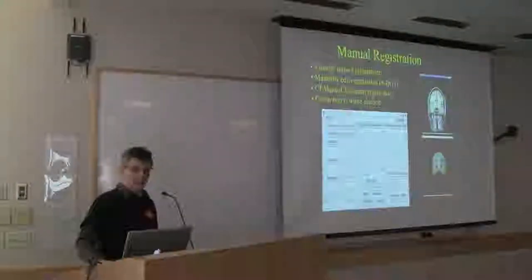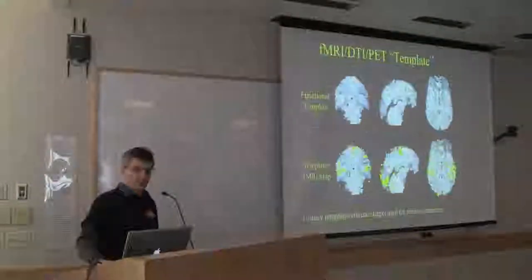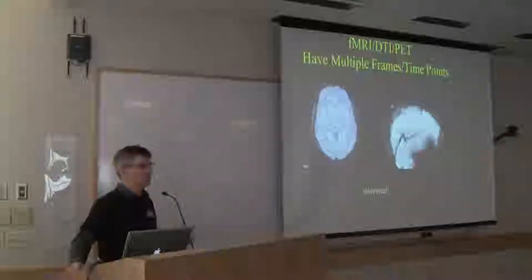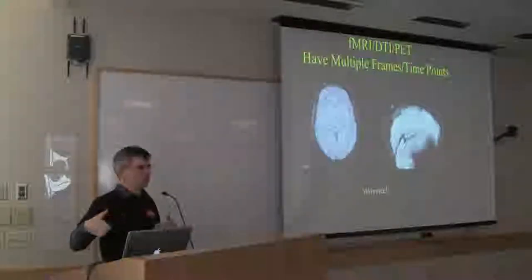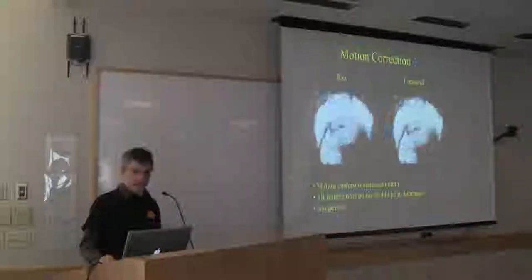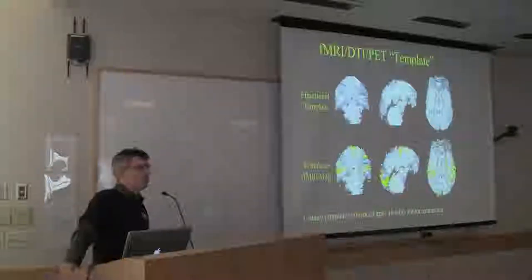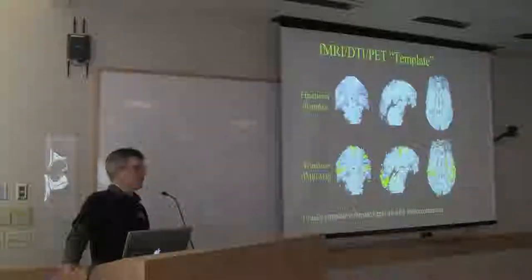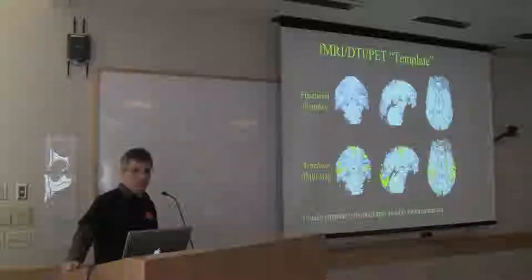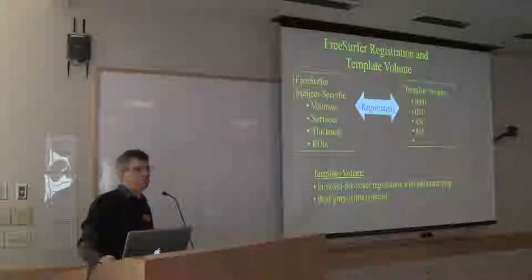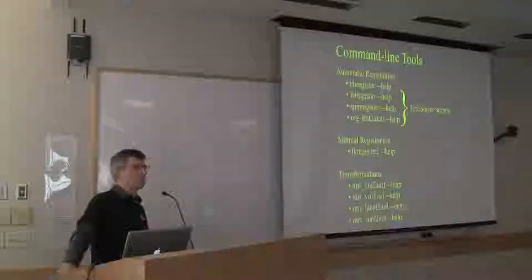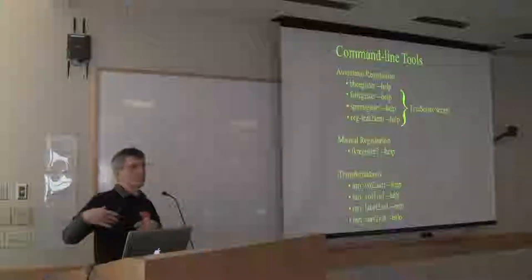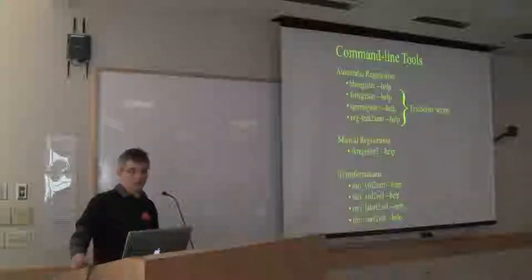To summarize: you have your DTI, fMRI, ASL, or whatever, which is going to be multiple time points. You would pick one of those time points and motion-correct to it. Then you do your multimodal analysis — fMRI, DTI, whatever — and that will generate maps in alignment with the template. You then perform a registration to go between that template and the FreeSurfer anatomical, which allows you to use commands to go from the multimodal volume to the FreeSurfer volume or vice versa, including all the surfaces.